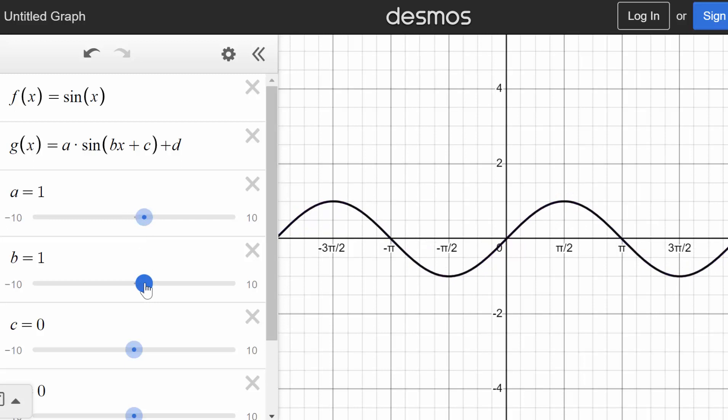Now we can look at b. This again deals with our period, a horizontal stretch or shrink. And we can see when we make b equal to 2, it goes through the period, the purple one is the parent function, goes through the period in half the distance.